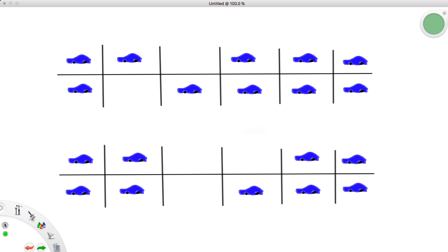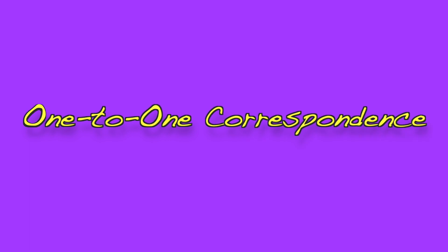If so, you have great intuition because comparing sizes relatively in this manner is another useful way to determine equivalence. If we match each car to a spot and there are spots left over, the set of parking spots is larger. On the other hand, if we match each car to a spot and there are still cars left over, then the set of cars is larger. If we happen to match each car to a spot and each spot had exactly one car with no leftovers on either side, then we can say they are equivalent. This is what we call a one-to-one correspondence.